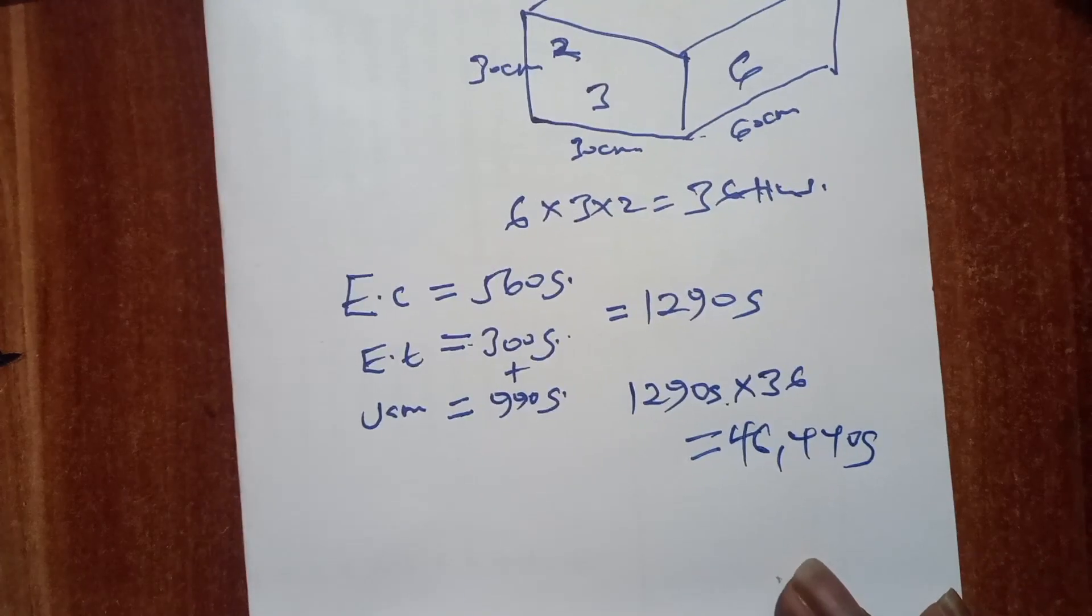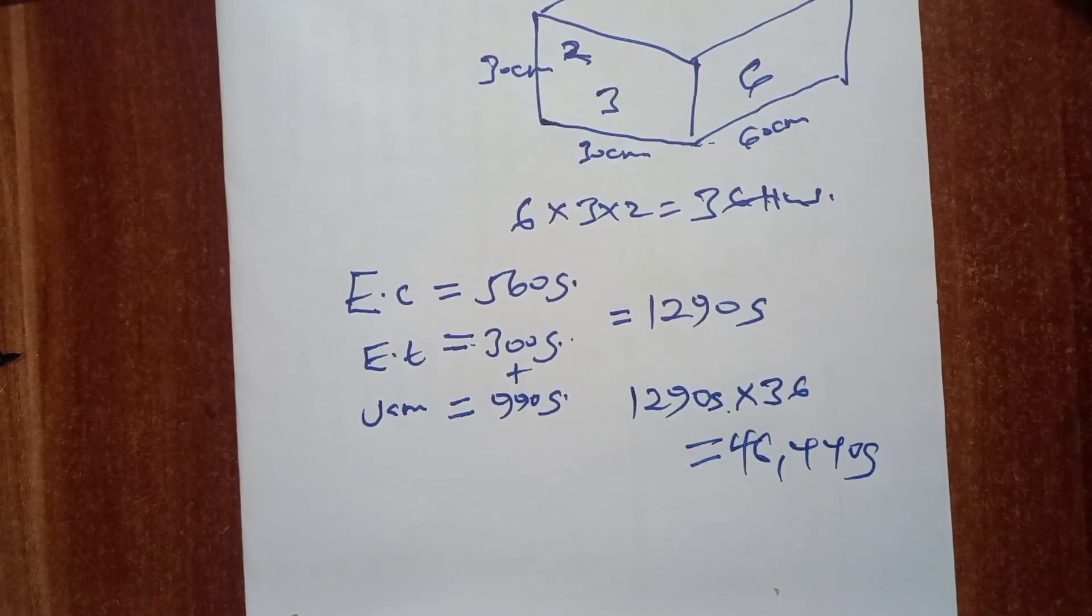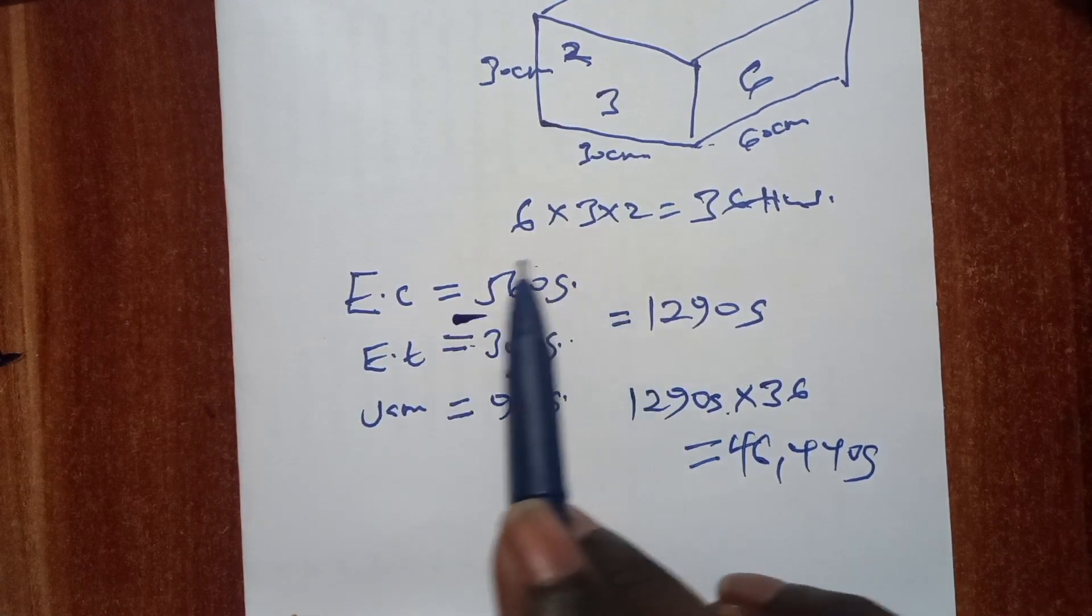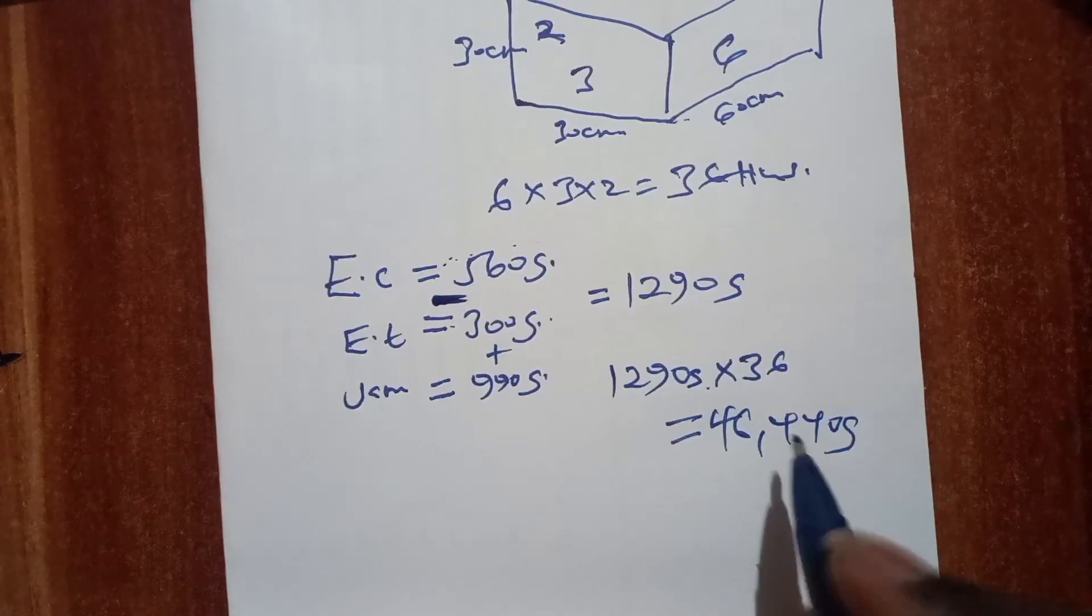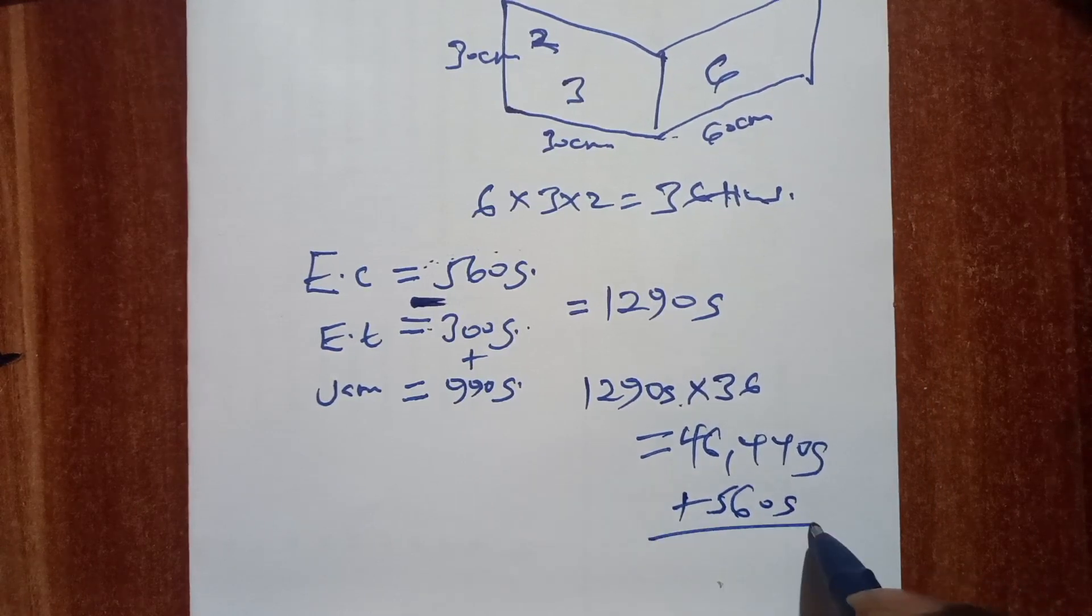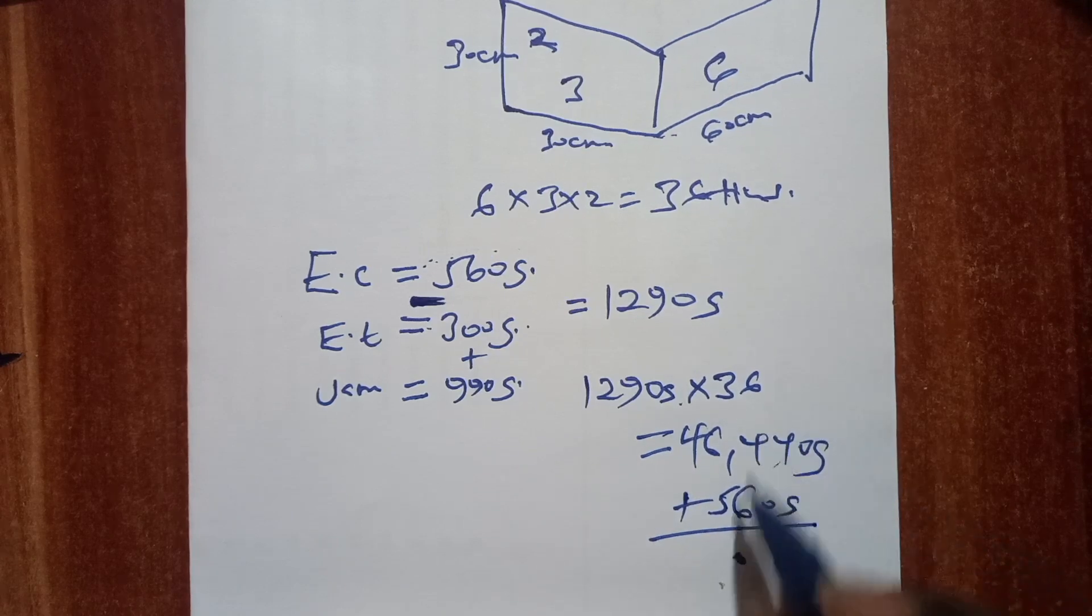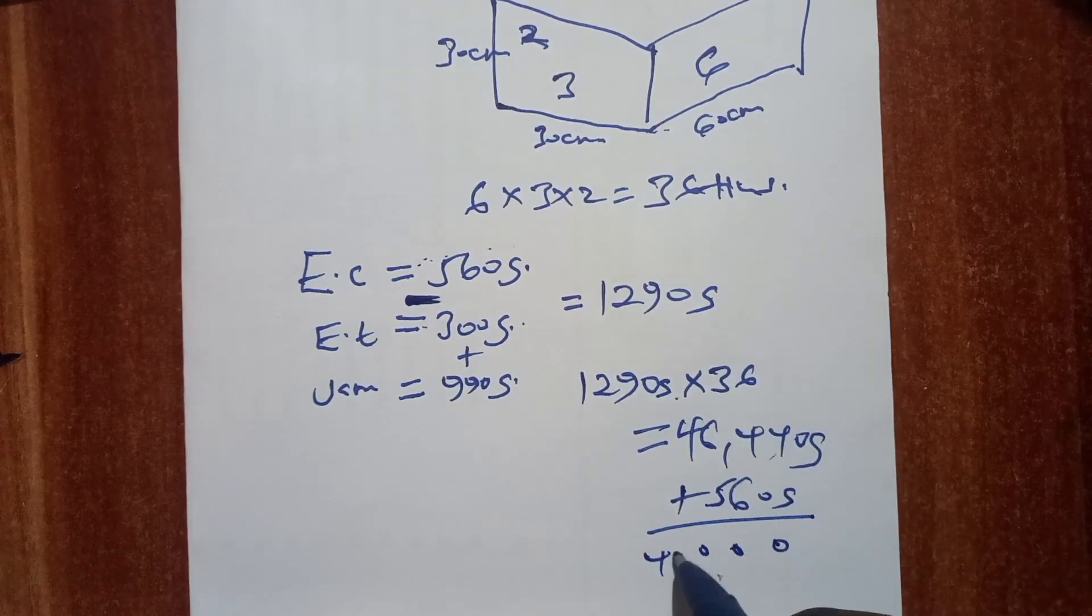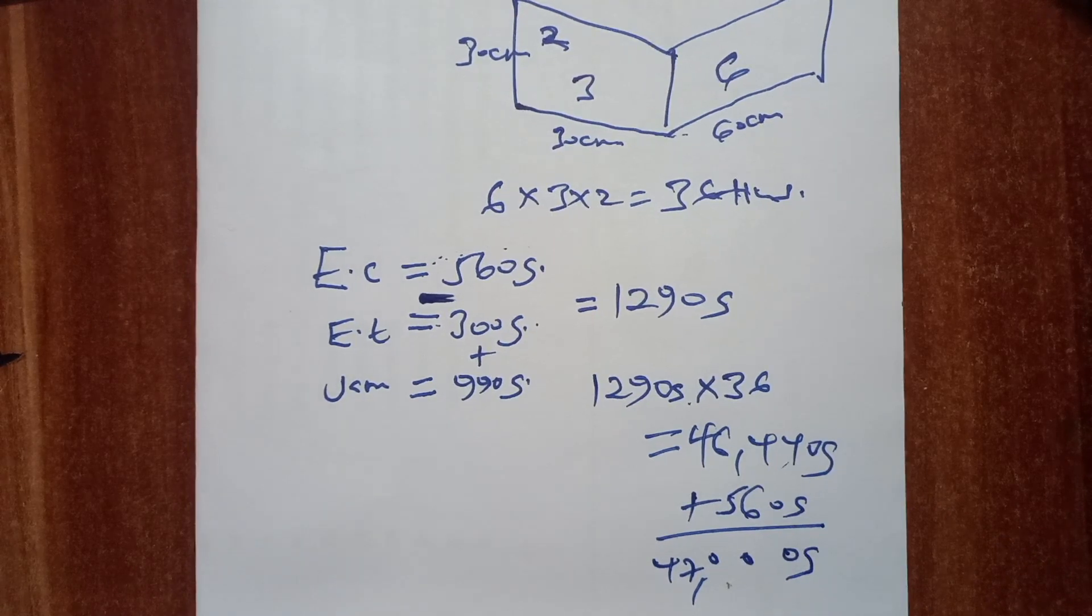Now the other thing that the person who set the question is counting on is that you will forget to add the weight of the box. So the weight of the box is 560 grams. We add 560 grams, which gives us 47,000 grams. So a whole box with 36 tins full of jam weighs 47,000 grams or 47 kilograms.